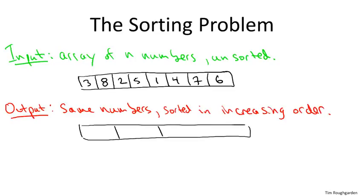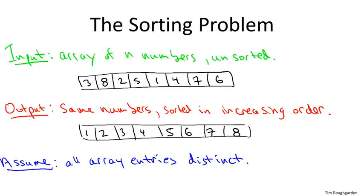Like when we discussed merge sort, I'm going to make a simplifying assumption just to keep the lecture as simple as possible. Namely, I'm going to assume the input array has no duplicates. That is, all of the entries are distinct. And like with merge sort, I encourage you to think about how you would alter the implementation of quicksort so that it deals correctly with ties, with duplicate entries.